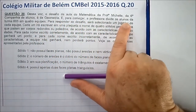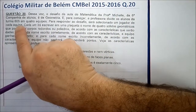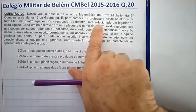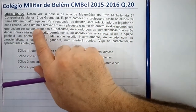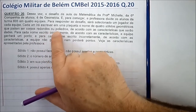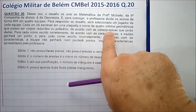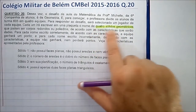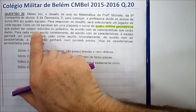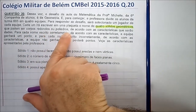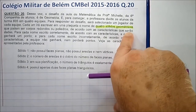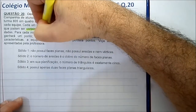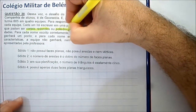Para começar, a professora divide os alunos da turma 605 em 4 equipes. Para responder ao desafio, será selecionado um jogador de cada equipe. Cada um irá escrever em uma plaqueta o nome de quatro sólidos geométricos, que podem ser corpos redondos ou poliedros, de acordo com as características que serão dadas. O que é um corpo redondo e o que é um poliedro?